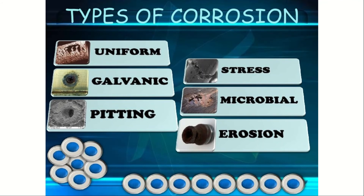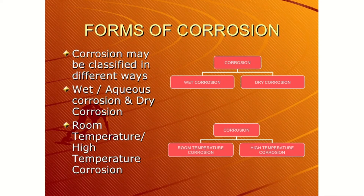Corrosion also reduces the economy level on a yearly basis because of the huge amount of corrosion damage. Forms of corrosion: corrosion may be classified in different ways — wet or aqueous corrosion and dry corrosion, and room temperature or high temperature corrosion.